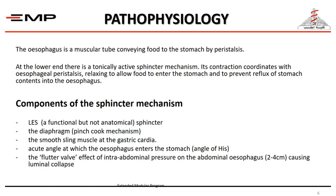This sphincter mechanism has many components. The most important is the lower esophageal sphincter. We also have the diaphragm with its pinch-cock mechanism, the smooth sling muscle fibers of the gastric cardia, the acute angle of His at which the esophagus enters the stomach, and the flutter valve effect of the intra-abdominal pressure on the abdominal esophagus — about two to four centimeters — causing luminal collapse.